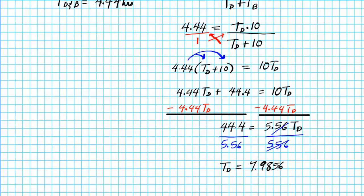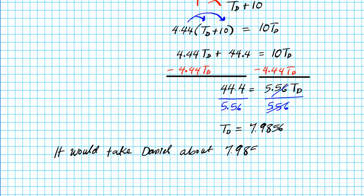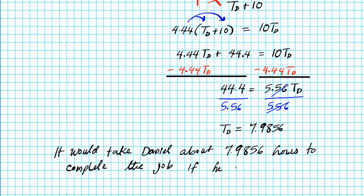What does this answer mean in the context of this problem? It will take Daniel about 7.9856 hours to complete the job if he were working alone.